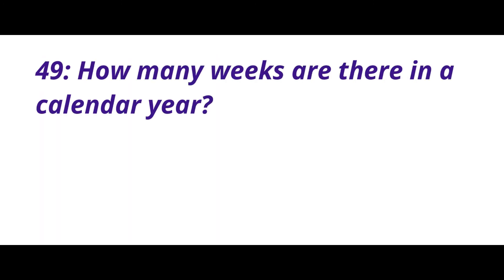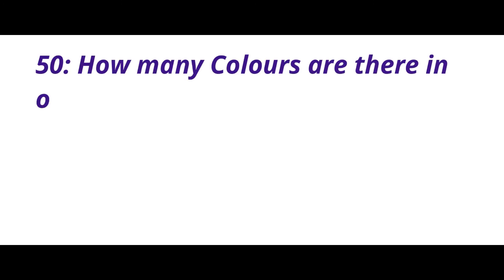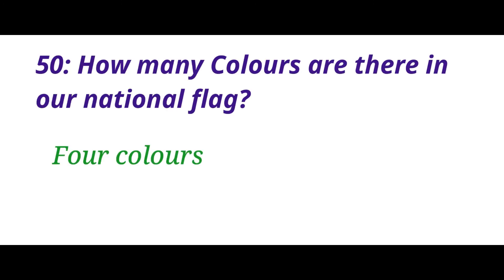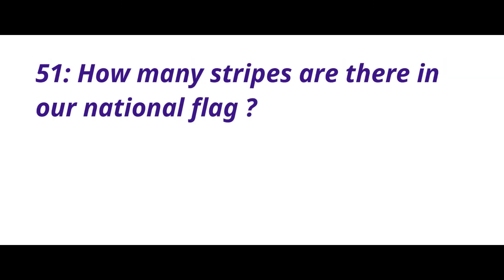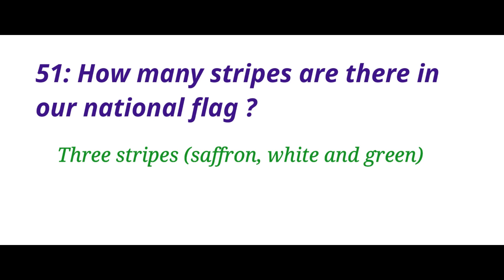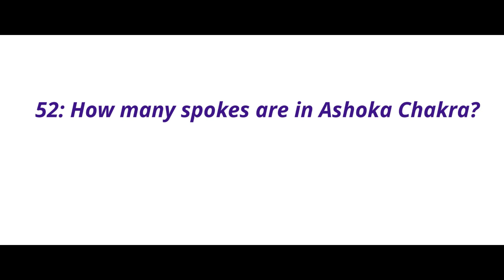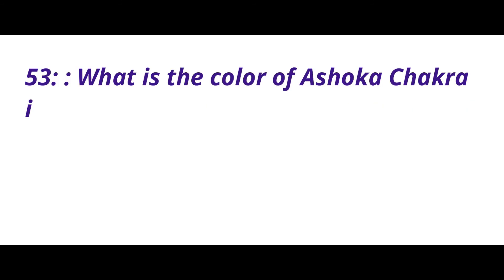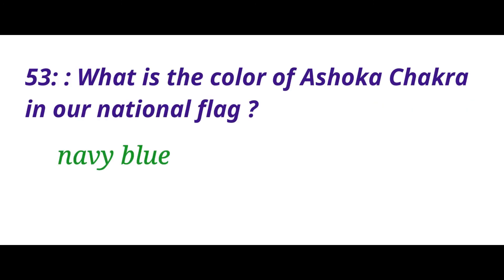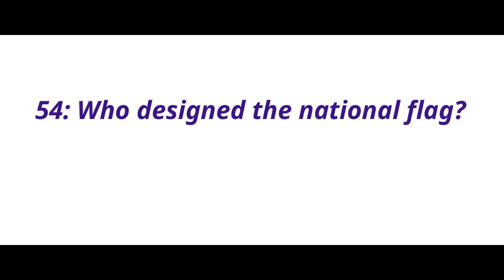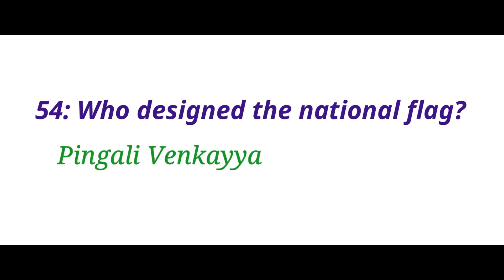How many weeks are there in a calendar year? The answer is 52 weeks. How many colors are there in our national flag? The answer is 4 colors. How many stripes are there in our national flag? The answer is 3 stripes — Saffron, White, and Green. How many spokes are in the Ashoka Chakra? The answer is 24 spokes. What is the color of the Ashoka Chakra in our national flag? The answer is navy blue. Who designed the national flag? The answer is Pingali Venkayya.